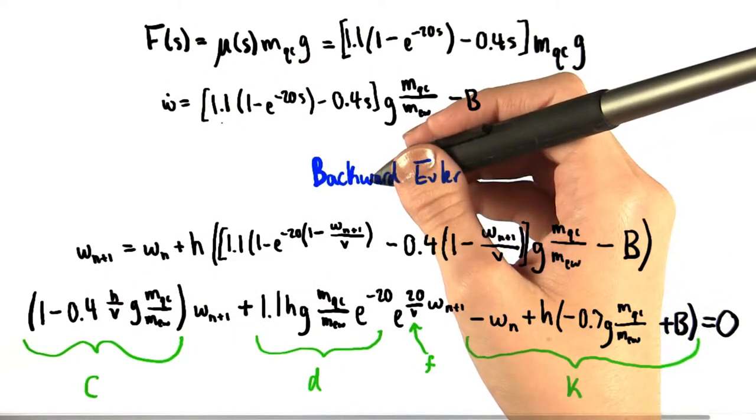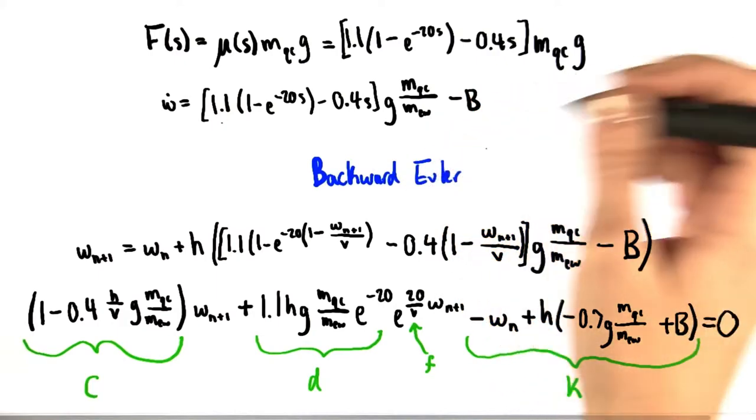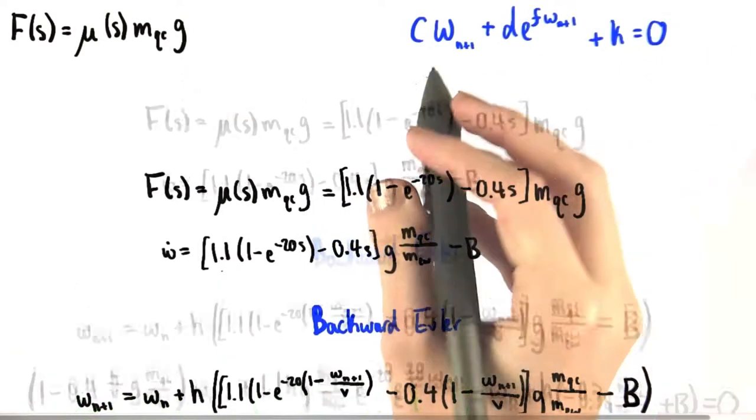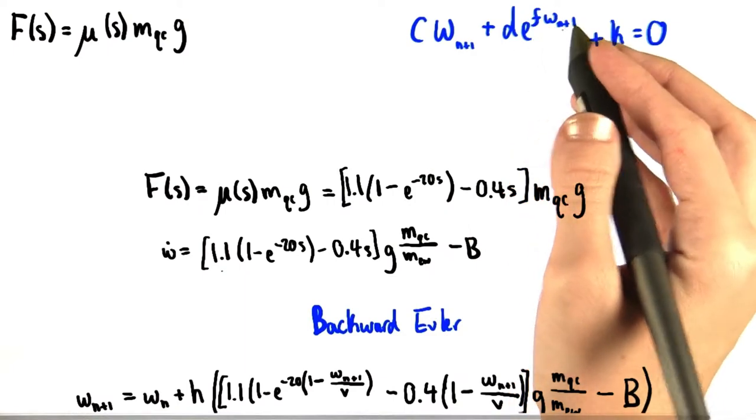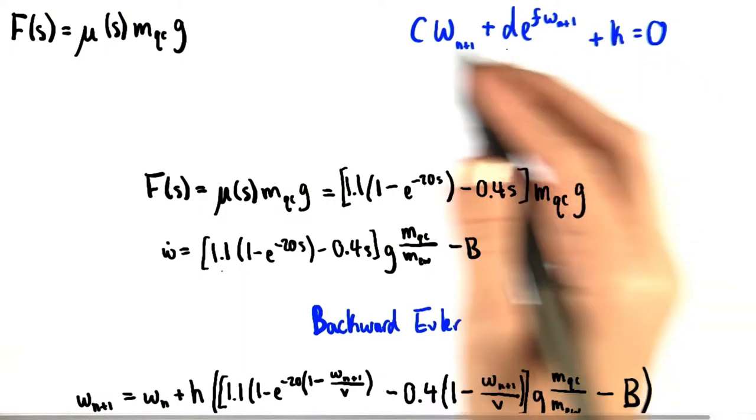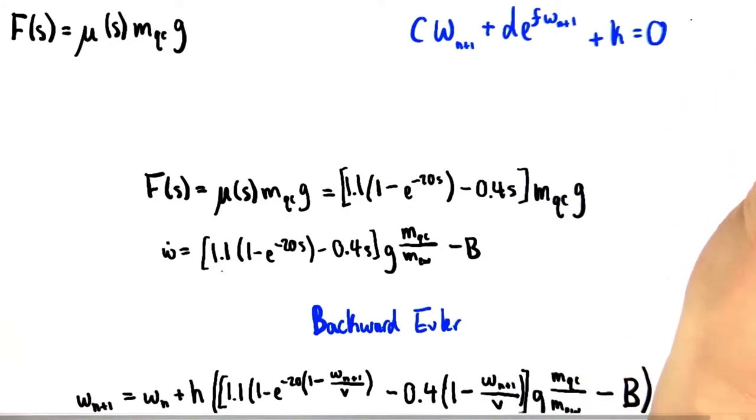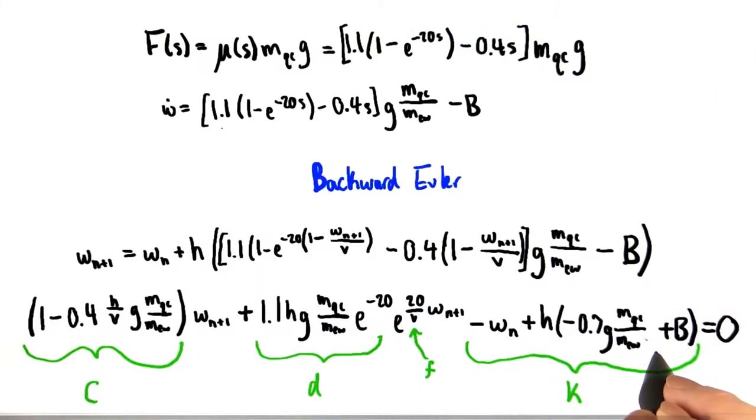Remember, however, that our initial request for w was that it obey an equation of the form that I wrote up here. We have a term with w sub n+1, and a term with e to that value, and also a constant. All of this added together equaling 0. That is exactly what we have down here now.